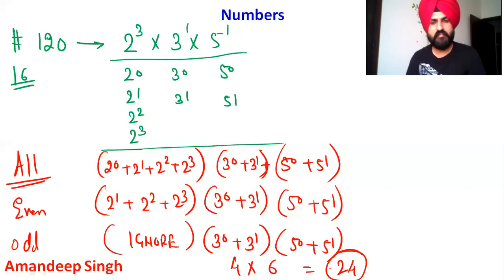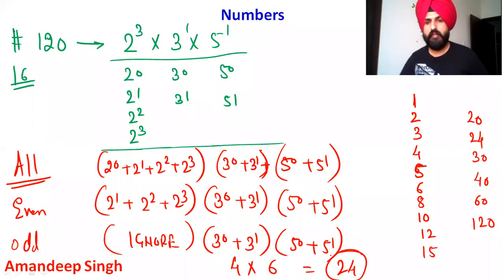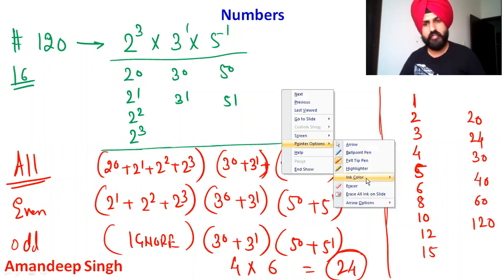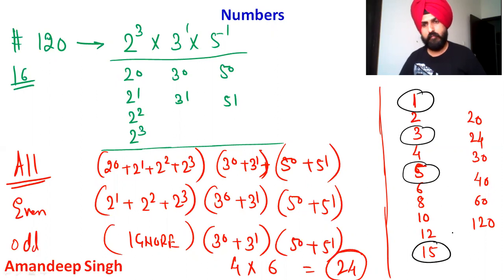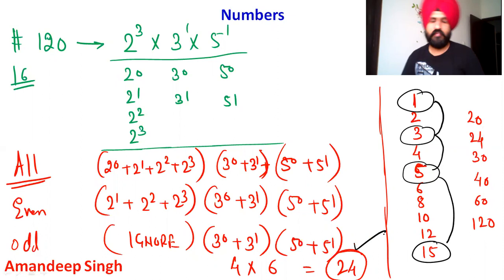We can verify by listing the odd factors of 120: 1, 3, 5, and 15. Adding them: 1 + 3 = 4, 4 + 5 = 9, 9 + 15 = 24. Confirmed — the sum of odd factors is 24.